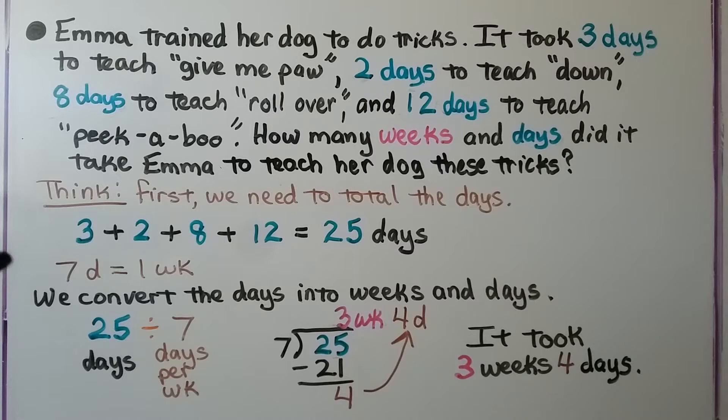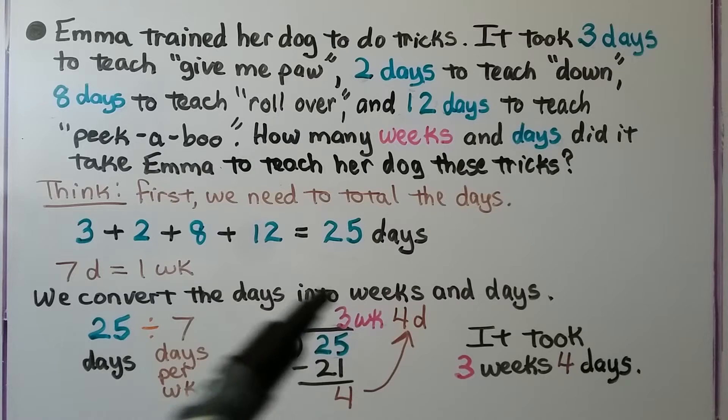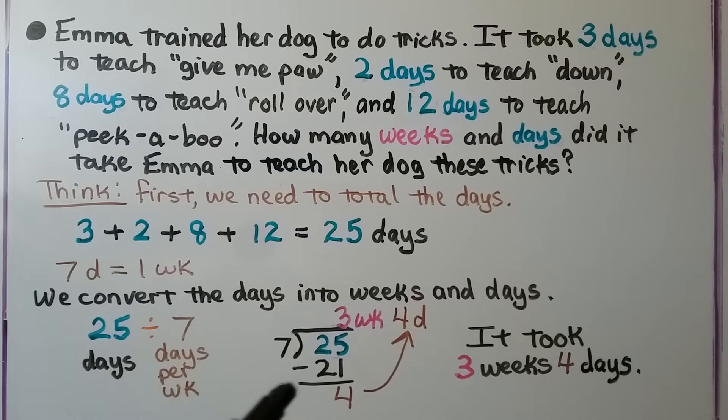There's seven days in one week. We convert the days into weeks and days. 25 days divided by seven days per week. Seven fits into 25 three times, because seven times three is 21. That leaves four left over. That's four out of seven, four days out of a week. It took three weeks and four days.